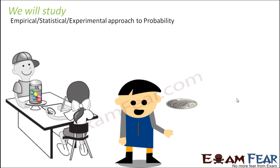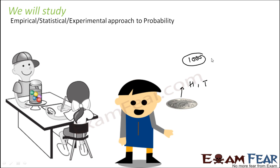For example, let us find the probability of getting a head if I toss a coin. If I toss a coin, I will either get head or tail. So what I will do is perform this experiment maybe a thousand times. In those thousand times, I may get, let us suppose, 490 heads and 510 tails. So we can find that the probability of head is total number of heads by total number of observations.